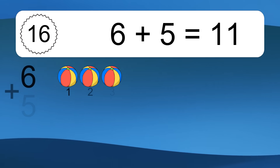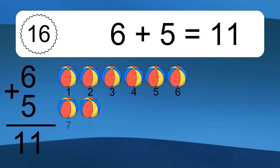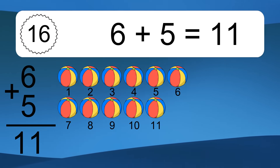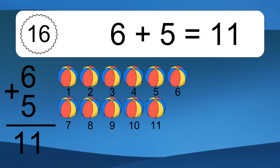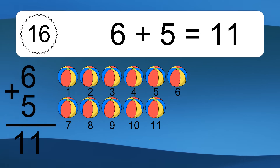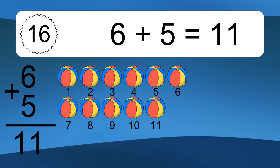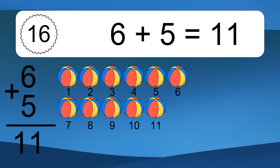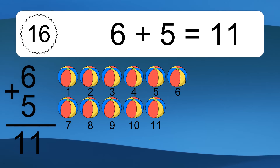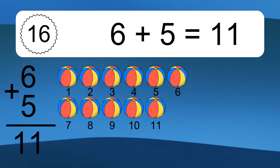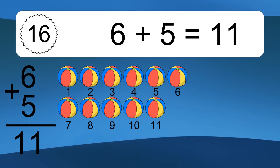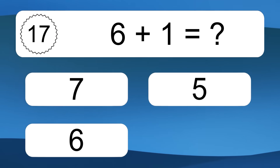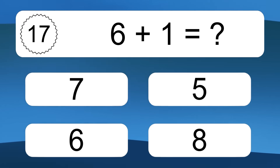6 plus 5 equals what? 6 plus 5 equals 11. Let's count it: 1, 2, 3, 4, 5, 6, 7, 8, 9, 10, 11.